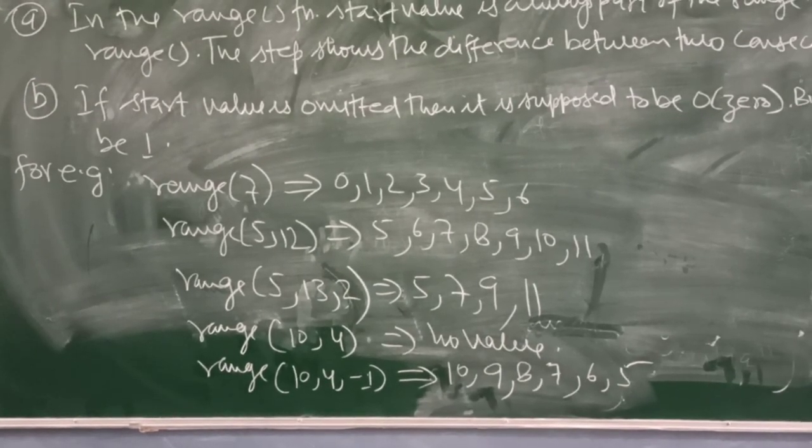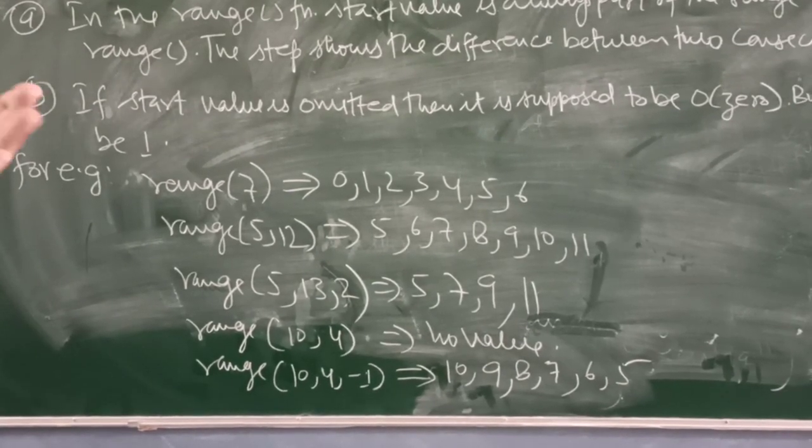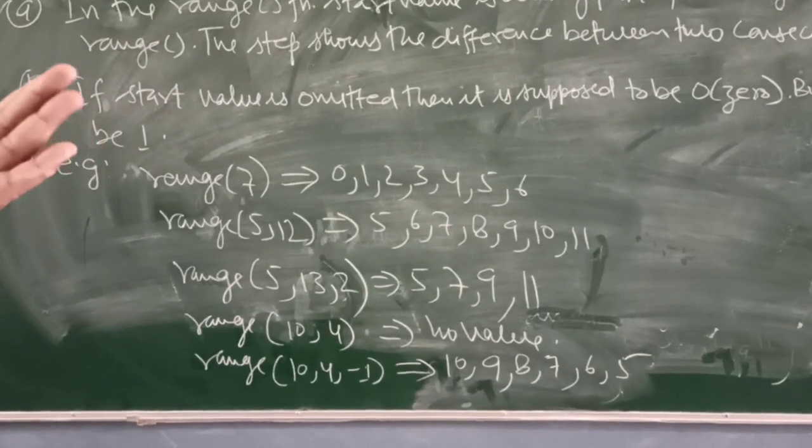In another case, range(5, 13, 2) will print 5, 7, 9, 11.